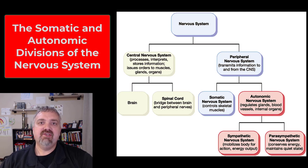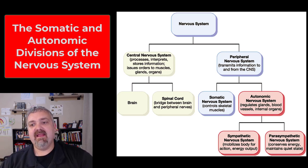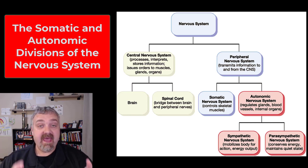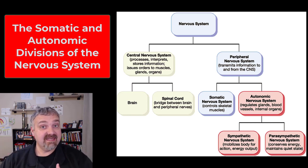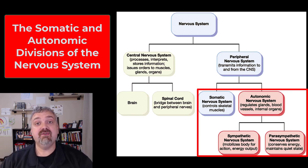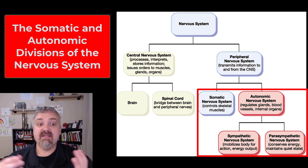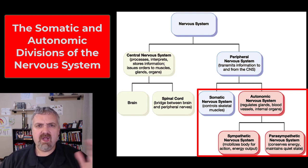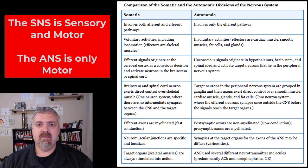Hey everybody, Dr. O here. So we're going to jump into the ANS or the autonomic nervous system, and I like to start by comparing the somatic nervous system to the autonomic nervous system so we can see how it's going to be different than the system we've already covered. These are going to be the two divisions or two branches of your peripheral nervous system. We'll cover the ANS itself in much more detail later, but here's a nice comparison of the two.